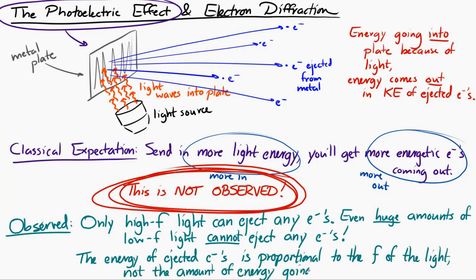This was not what we would expect. We would expect that if you send more energy in, you'd get more energy out. But there's also a frequency component to it. If you send in low-frequency light below a certain threshold, no electrons come out, even if you send in a huge amount of energy. The energy of those ejected electrons is proportional to the frequency of the light, not the amount of energy sent in. This was explained by Einstein in the early 20th century, and this is how he earned a Nobel Prize.